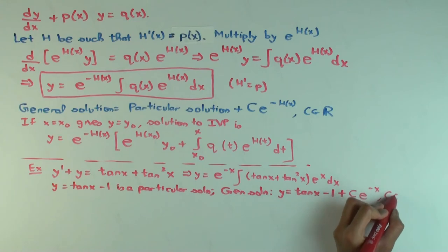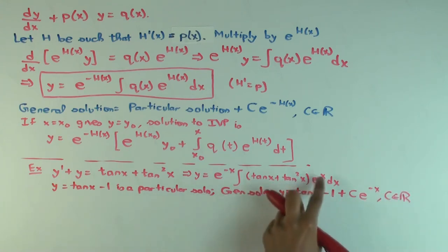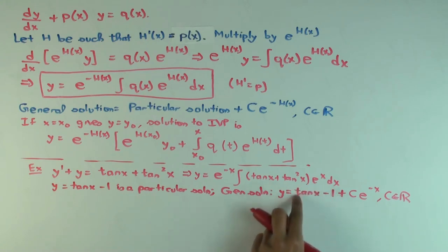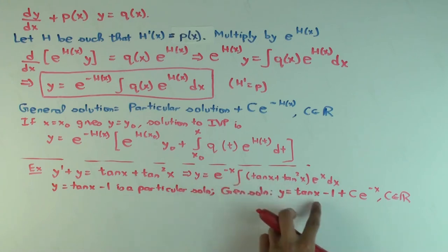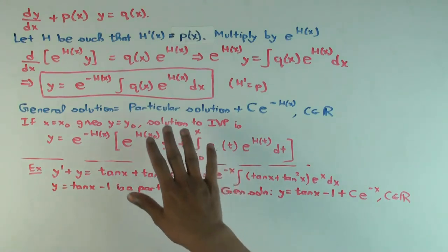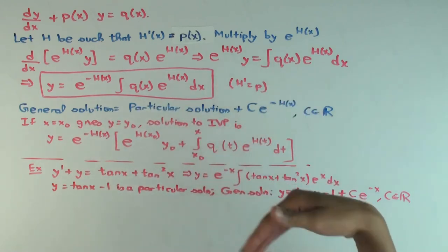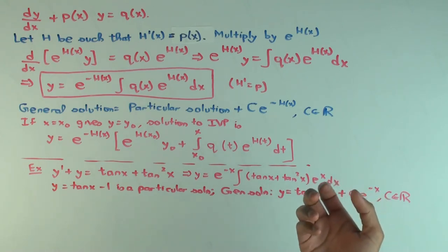To confirm: if you had done the full integral of (tan x + tan²x)·e^x dx, you would get e^x·(tan x − 1) + c. Multiplying by e^(-x) gives the same result. The key point is that once you find any particular solution by inspection or guesswork, the general solution is just that particular solution plus c·e^(-H(x)).